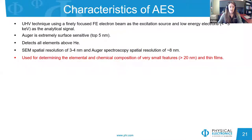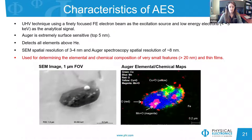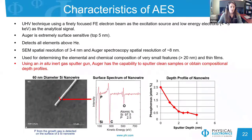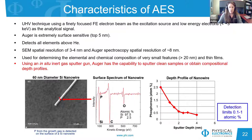Auger can determine elemental and, in some cases, chemical composition of small features and thin films. Here is an example of an inclusion in carbon steel observed in SEM; the corresponding Auger color overlay map shows the elemental composition of the inclusion, and we can infer some chemical information as well. Auger can also obtain compositional depth profiles or sputter clean samples using an in-situ gas sputter gun. A depth profile from a 60 nanometer silicon nanowire shows the phosphorus signal decreasing with depth. Typical detection limits for Auger are in the 0.1 to 1 atomic percent range.